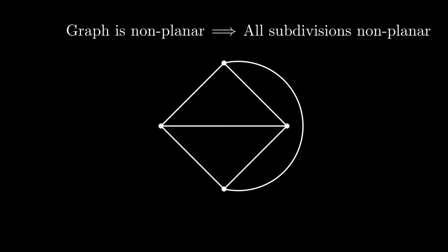By the contrapositive, we can conclude that if a graph is non-planar, then all of its subdivisions must also be non-planar.